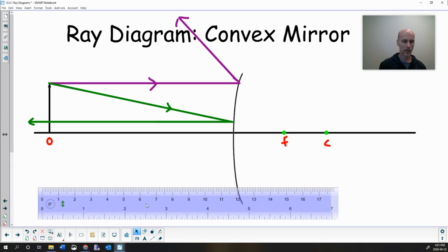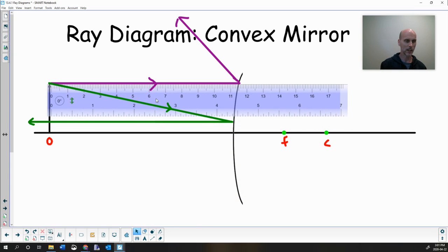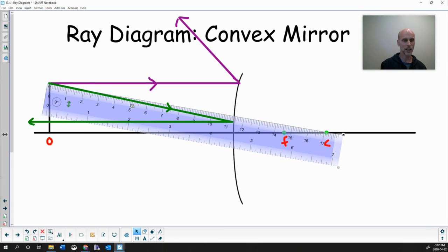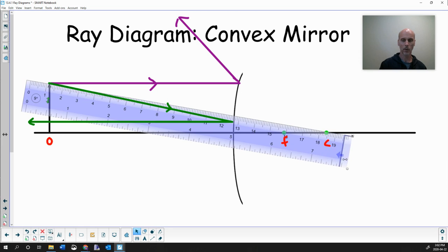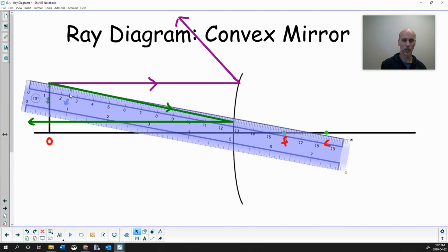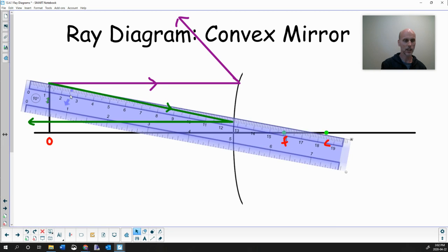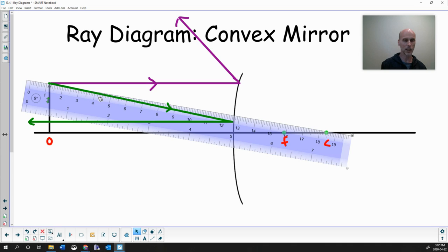Third ray. And again, this is very similar to the one we drew for a concave mirror. It's got to do with that center of curvature point. So it is going to be, if we connect our ruler with the tip of our object and the center of curvature, let's get it lined up pretty good there. Not bad.